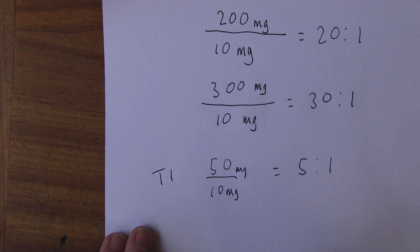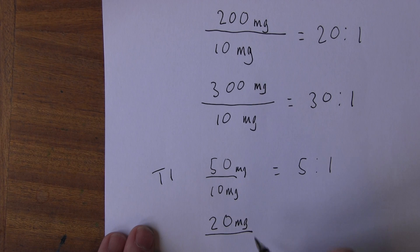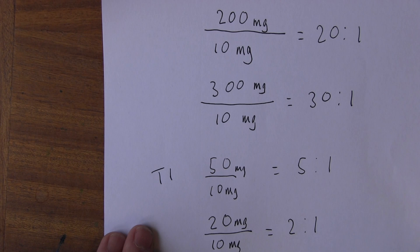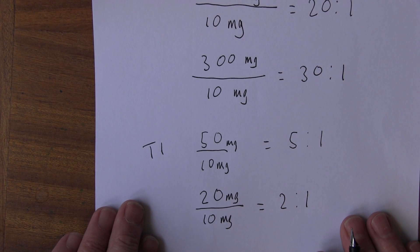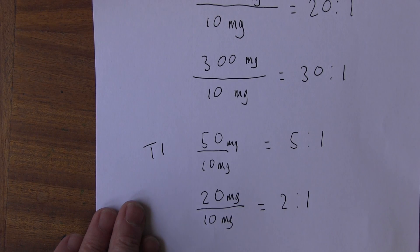Other drugs like digoxin have a roughly 2 to 1 therapeutic ratio. Keeping the math simple, if 20 milligrams is the toxic dose and 10 milligrams is the effective dose, that equals a 2 to 1 ratio. That drug would require much more careful management because the possibility of toxicity effects is significant — we'd need to be much more careful about how we give it and how we monitor for toxicity side effects.